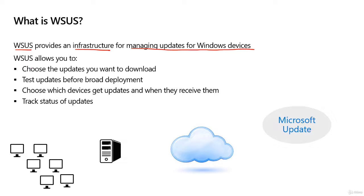WSUS allows you to choose which updates you want to download. You can — and should — test them before deploying to your production environment. Some environments deploy updates to a handful of virtual machines first to make sure they don't destabilize anything. Others deploy to a small subset of production computers first, and if everything goes well, then roll out to the broader audience.